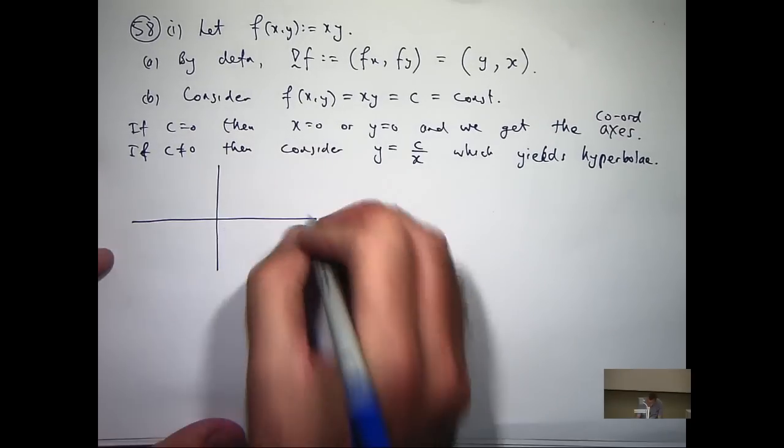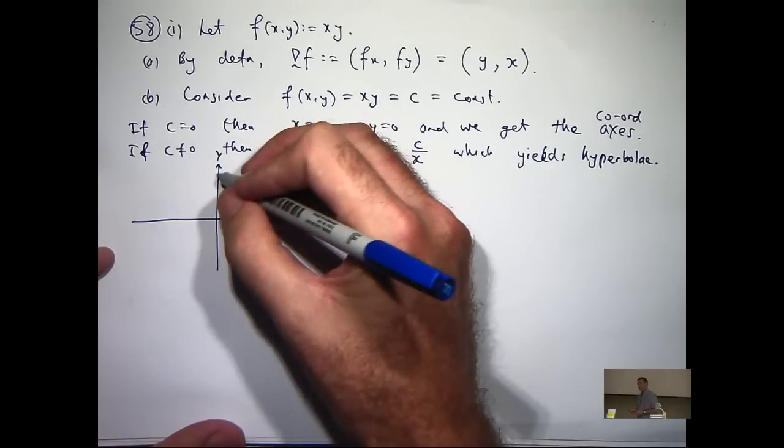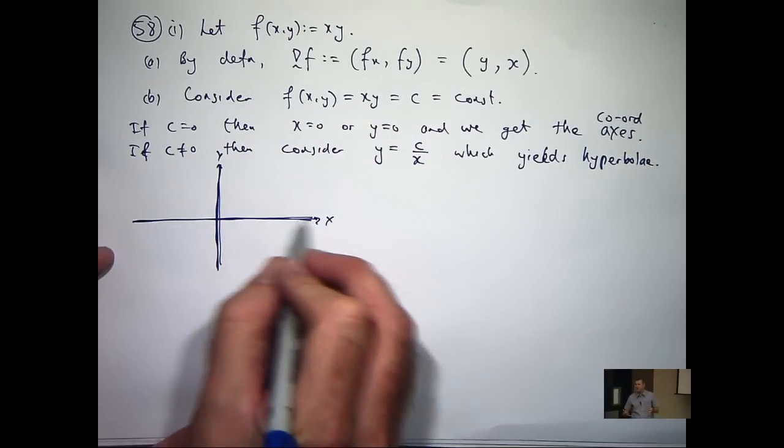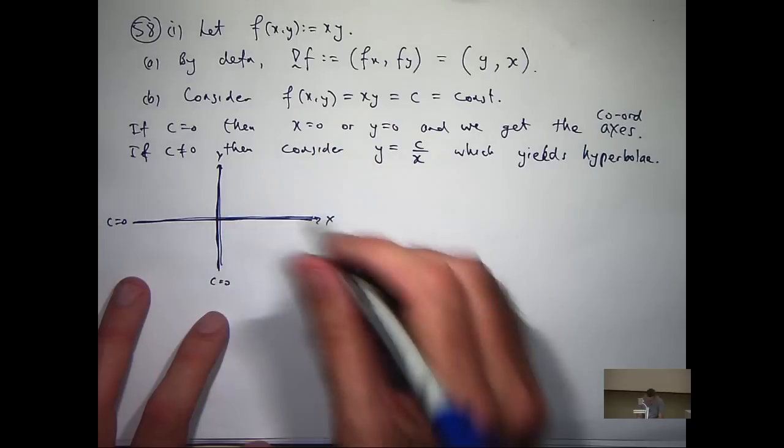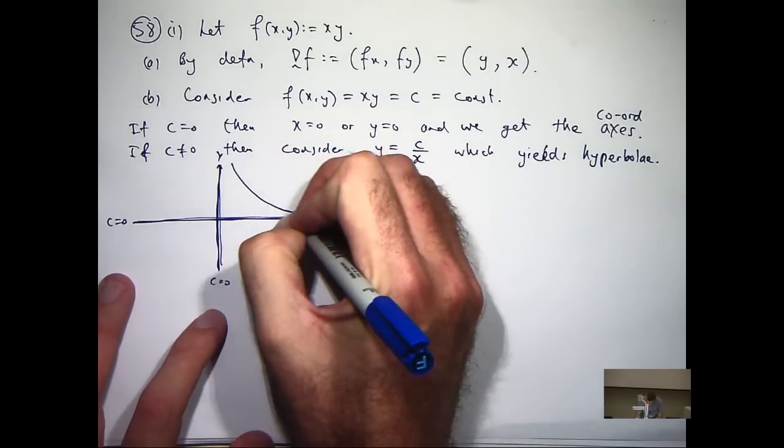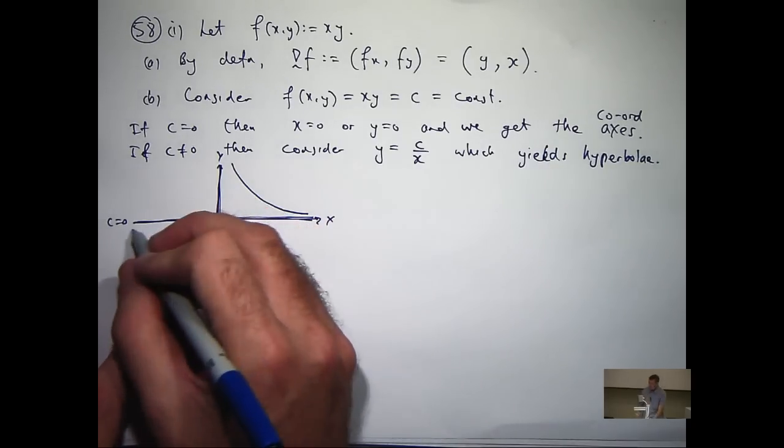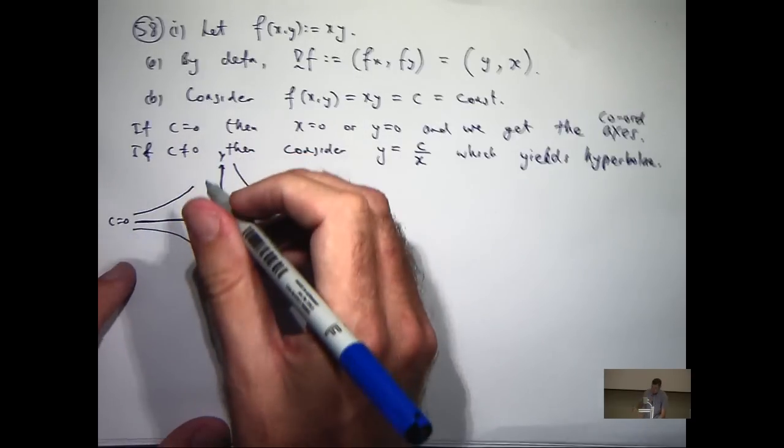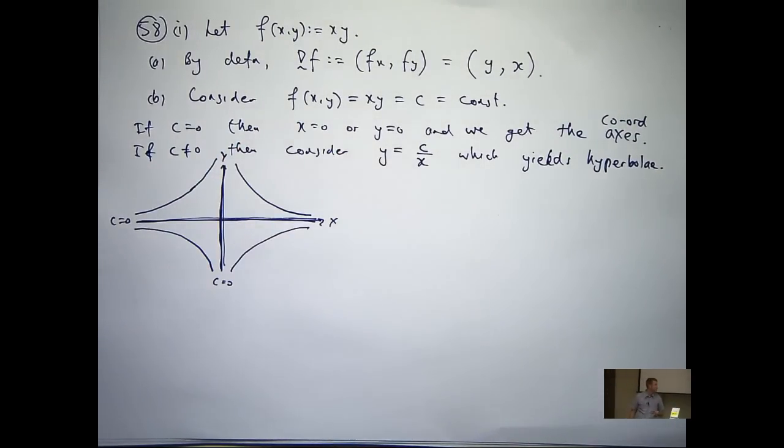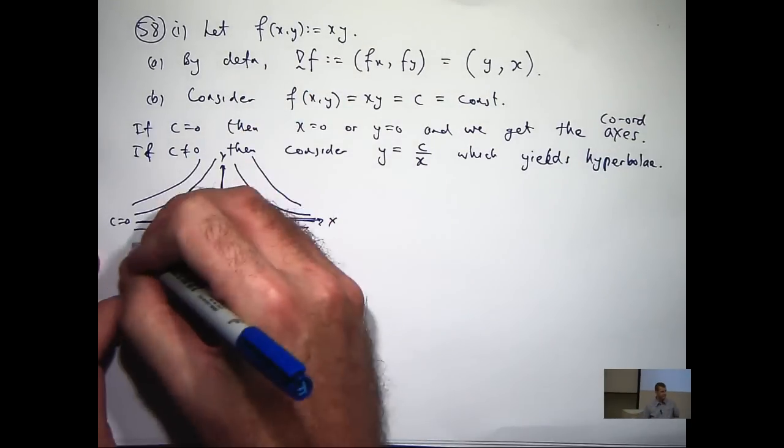Okay, so let's draw some in the xy plane. So the coordinate axes are the case c equals 0. So for, say, c equals 1, we're going to get something like y equals 1 on x. So that's going to be like that. So we're going to get these kind of curves. So I've drawn in a few of those. You can keep drawing them in if you want to.